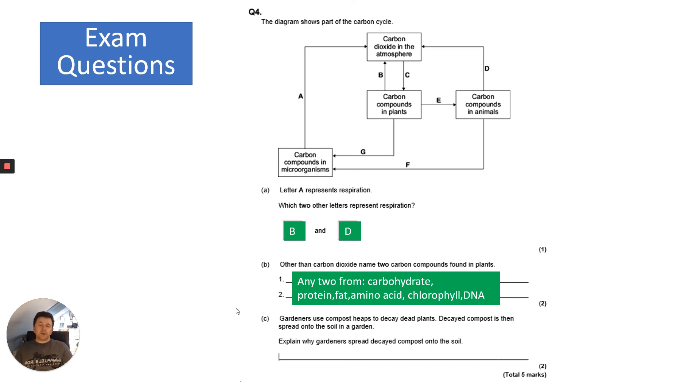The last question: gardeners use compost heaps to decay dead plants. Decayed compost is then spread onto the soil in a garden. Explain why gardeners spread decayed compost onto the soil. This is not really fully related to the carbon cycle, but the answer would be that they provide minerals or nutrients, and these allow the plants to grow more vigorously or better.